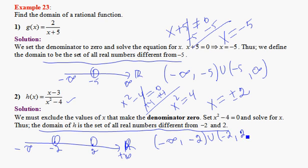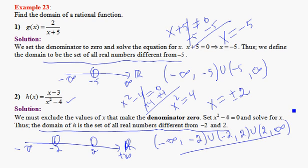In interval notation, the domain starts from negative infinity to -2, union from -2 to 2, union from 2 to infinity. This is the interval notation for the domain of h(x) = (x-3)/(x²-4).